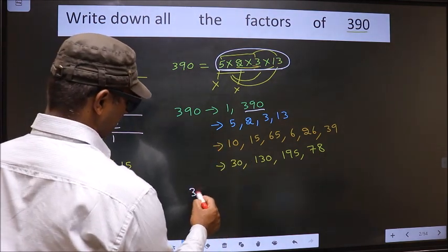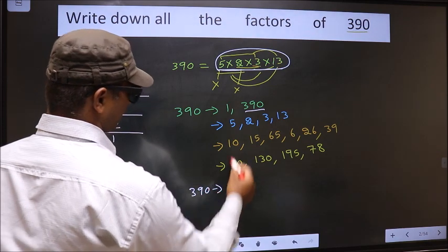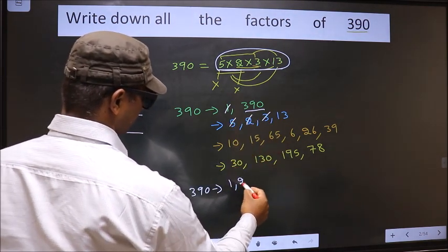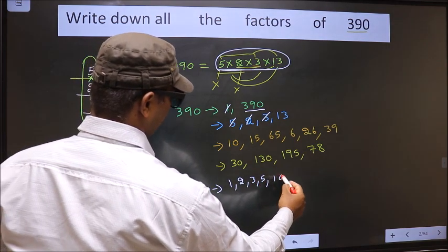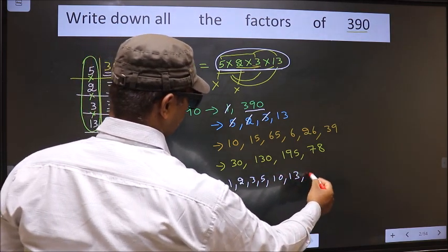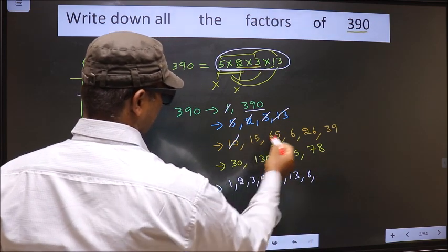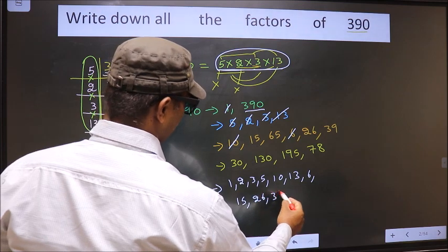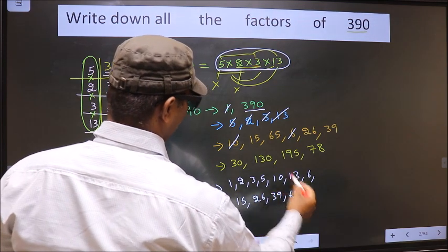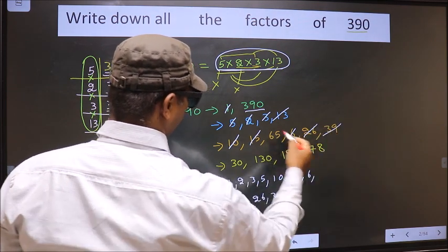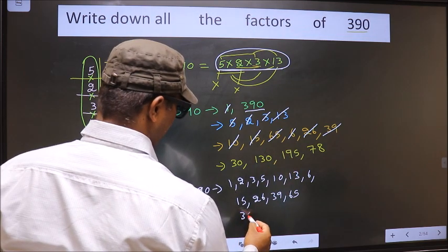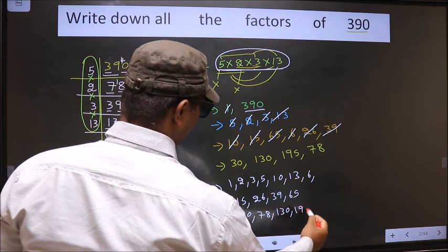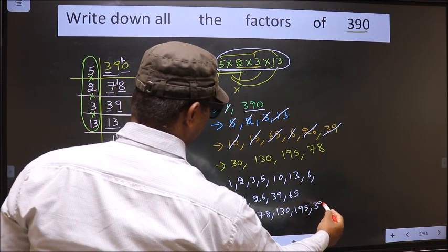Therefore, these are all the factors of 390. That is 1, 2, 3, 5, 10, 13, 6, 15, 26, 39, 65, 30, 78, 130, 195 and finally 390.